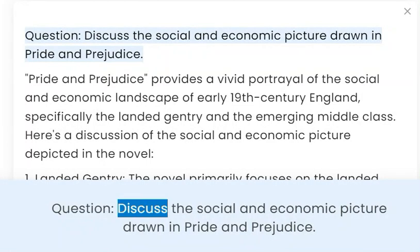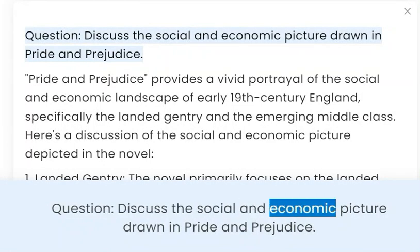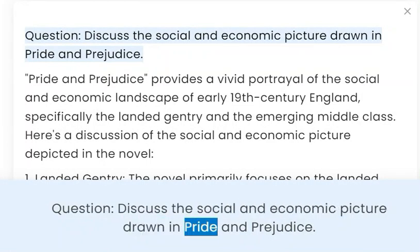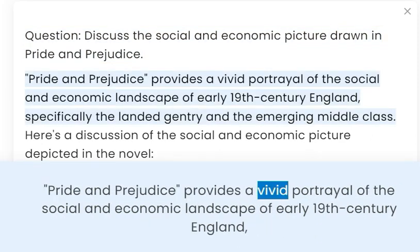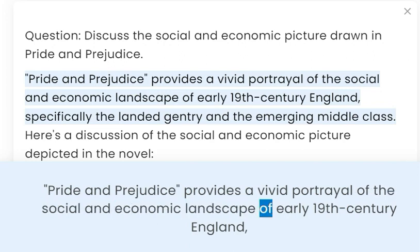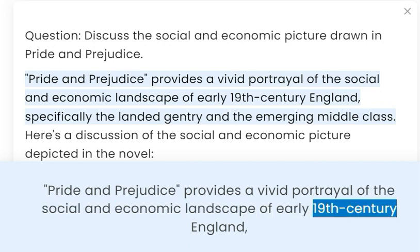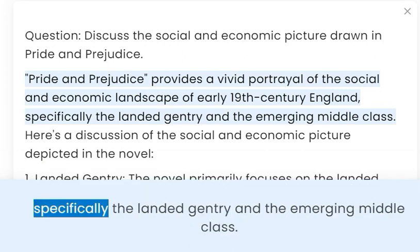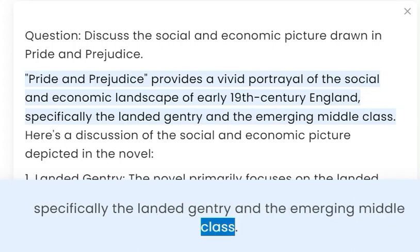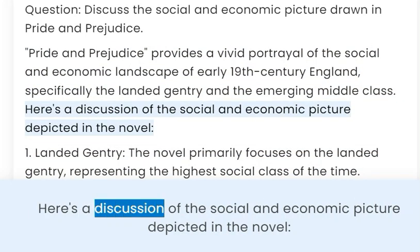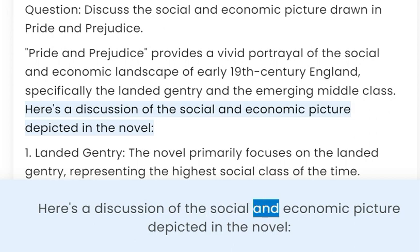Question: Discuss the social and economic picture drawn in Pride and Prejudice. Pride and Prejudice provides a vivid portrayal of the social and economic landscape of early 19th century England, specifically the landed gentry and the emerging middle class. Here is a discussion of the social and economic picture depicted in the novel.